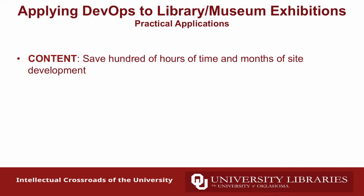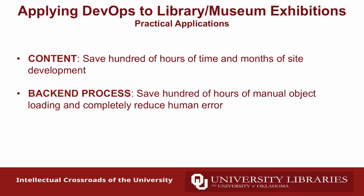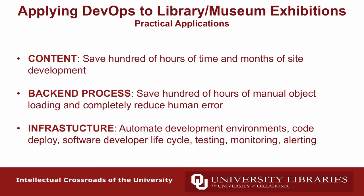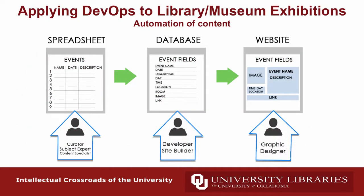I have three practical applications for you. The first is content - the unsung hero, often very overlooked, but it's where you can save hours and hours of time when developing your site. The second is our back-end processes - I have an example where we were able to automate our digitization process, again saving hours of loading objects manually into our repository. And finally our infrastructure - we just presented a new DevOps strategic vision this year that includes automated development environments, code deploy, software developer life cycle, testing, monitoring, and alerting.